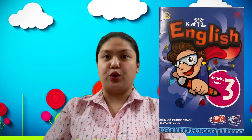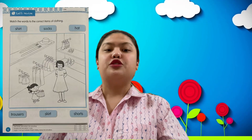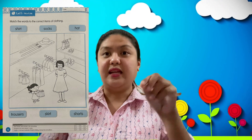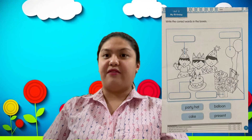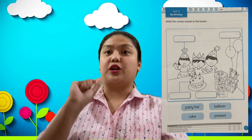Very good! Next, we will answer your English activity workbook, page number 6 and number 7. On page 6, it says: match the words to the correct items of clothing — you form a line to match the picture. On page number 7, write the correct word in the boxes. Understand, kids? Very good, good job!